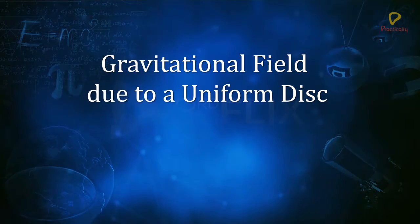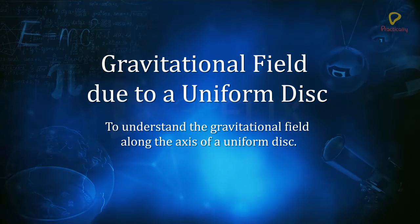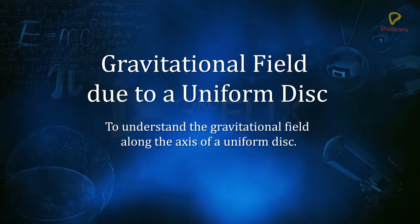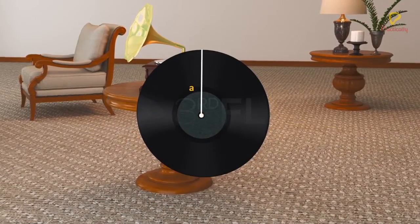Gravitational Field Due to a Uniform Disc. Objective: To understand the gravitational field along the axis of a uniform disc. Consider a uniform circular disc of radius A and mass M.